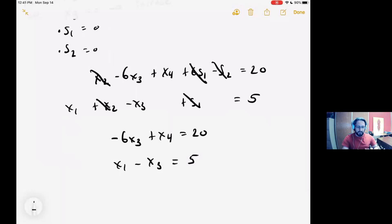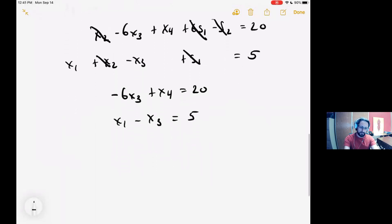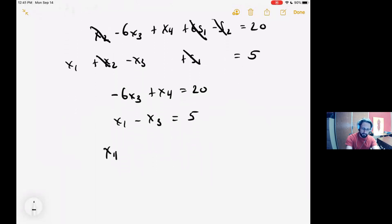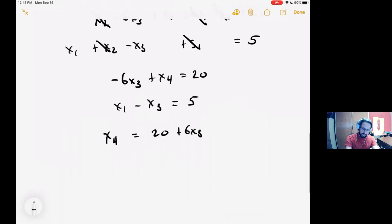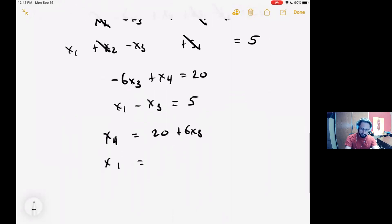Negative 6x3 plus x4 equals 20, and x1 minus x3 equals 5. Now x3 is the variable in this case. It's the variable whose value I am considering increasing. So I am going to solve both of these equations for x3. x4 equals 20 plus 6x3, and x1 equals 5 plus x3.